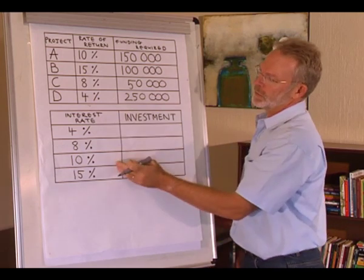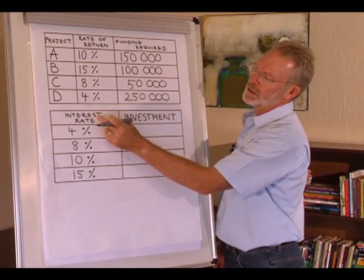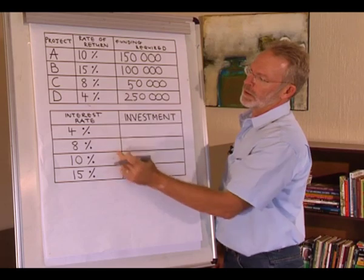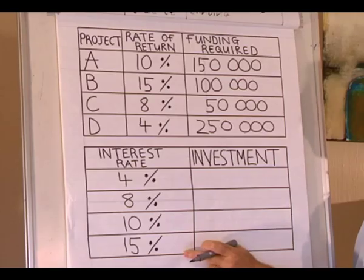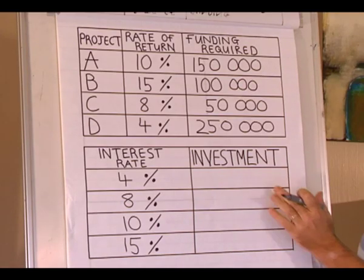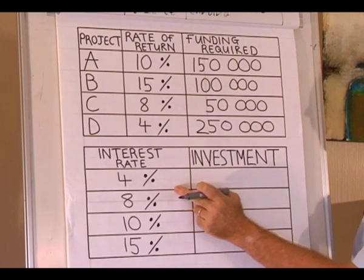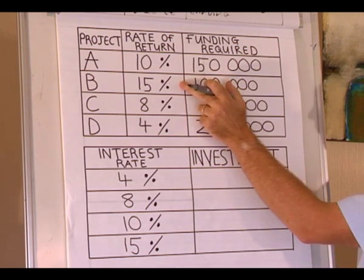In the bottom table, the cost of capital — the interest rate at which you borrow — are listed. The decision to invest is based on the cost of capital and the expected rate of return.